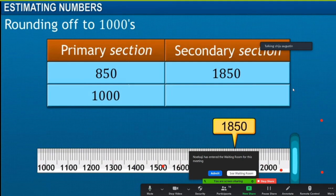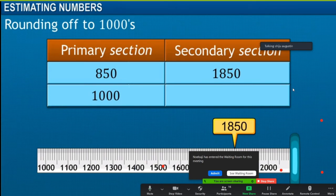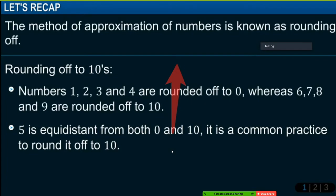In this module, you learned that the method of approximation of numbers is known as rounding off. While rounding off to tens, numbers 1, 2, 3, and 4 are rounded off to 0, whereas 6, 7, 8, and 9 are rounded off to 10. Five is equidistant from both 0 and 10, so it is a common practice to round it off to 10. Numbers 1 to 49 are rounded off to 0, whereas 51 to 99 are rounded off to 100. 50 is equidistant from both 0 and 100, and it is a common practice to round it off to 100.